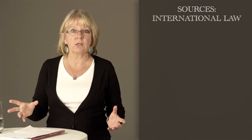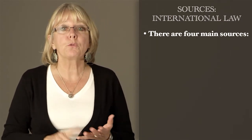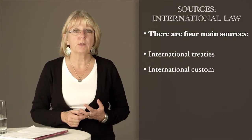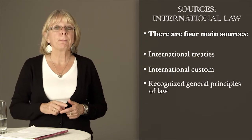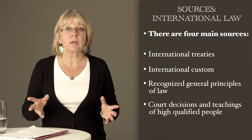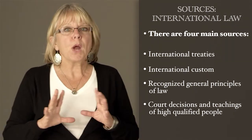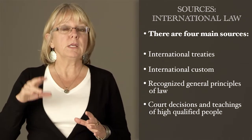Let's now turn our attention to sources of international law — where do we look when we want to know what the international law is on some subject? There are four main places to look. First, international treaties. Second, international custom. Third, the general principles of law that are recognized by nations. And fourth, court decisions and the teachings of the most highly qualified people of the various nations. The practice is for these to be applied in the order listed.